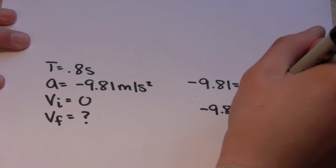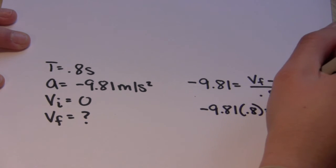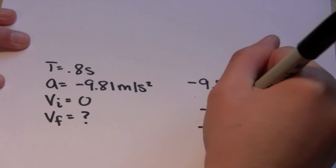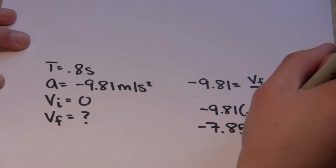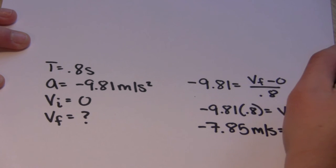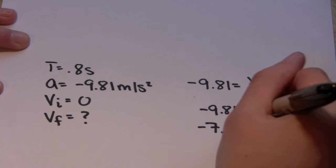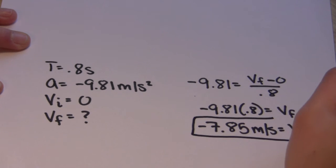We then plugged in the things that we knew and we got the equation. We then multiplied negative 9.81 times 0.8, which was the time, and we got negative 7.85 meters per second for the final velocity.